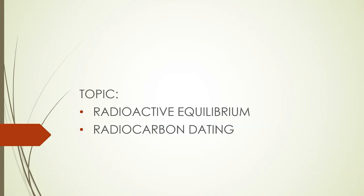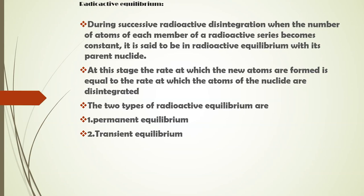Now we shall discuss the topic of radioactive equilibrium and radiocarbon dating. Radioactive equilibrium: during successive radioactive disintegration, when the number of atoms of each member of the radioactive series becomes constant, it is said to be in radioactive equilibrium with its parent nuclei. At this stage, the rate at which new atoms are formed is equal to the rate at which atoms of the nucleus are disintegrated.